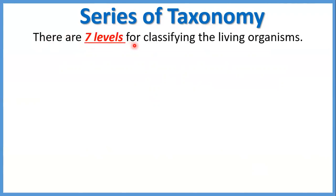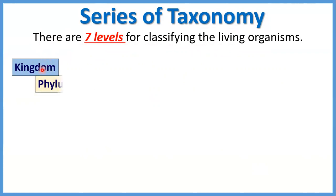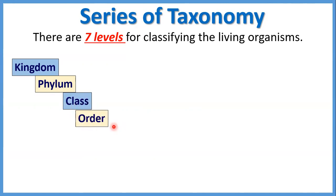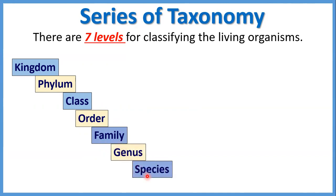There are seven levels for classifying the living organisms. أول level: kingdom — دي اللي هي الmain group بتاعنا. كل kingdom بتتقسم لphylum. كل phylum بيتقسم لclass. كل class بيتقسم لorder. كل order بيتقسم لfamily. كل family بتتقسم لgenus. وفي الآخر كل genus بيتقسم لspecies.